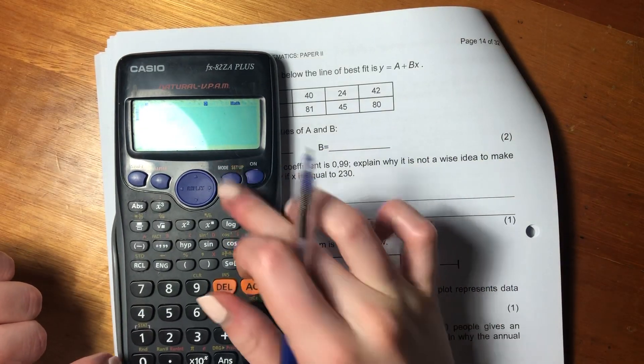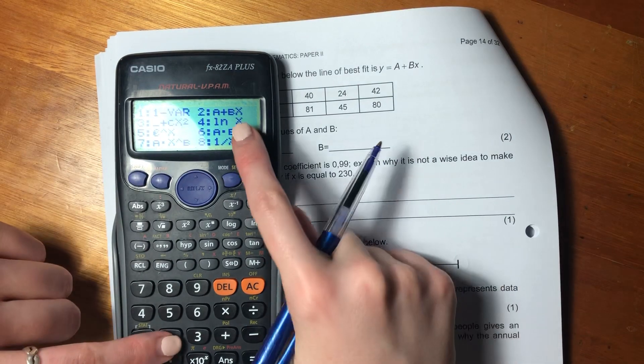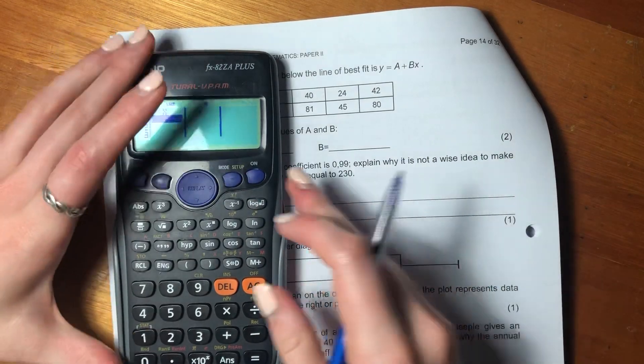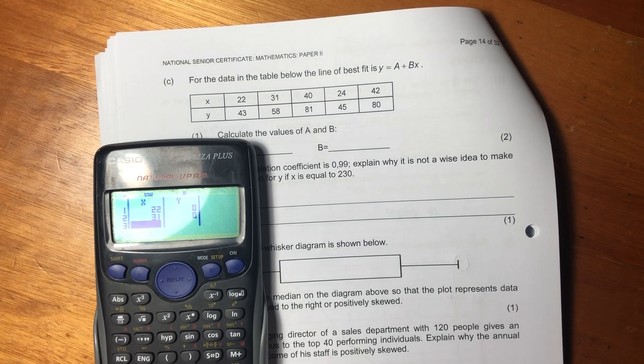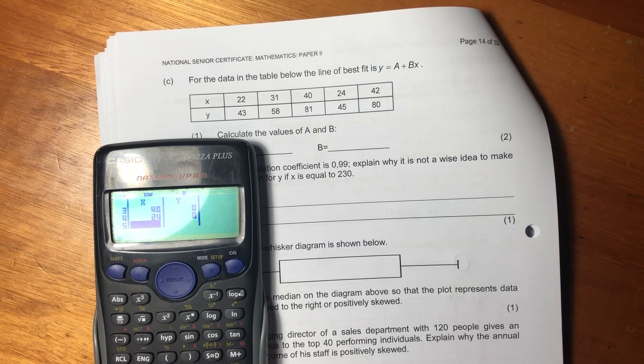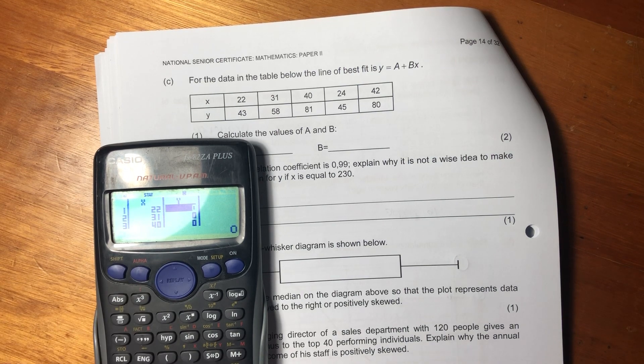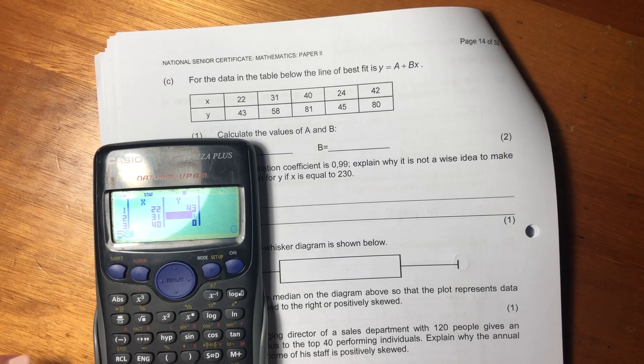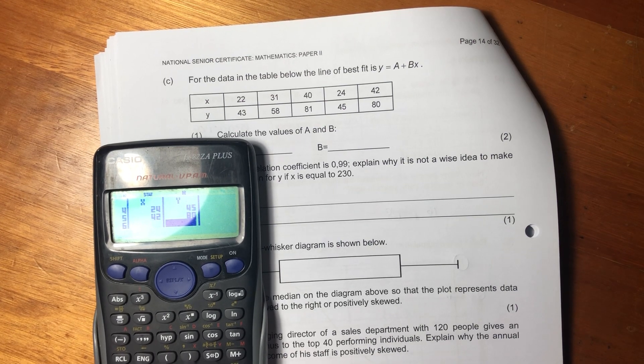Okay, you should be able to do this. Go to setup, press 2. We're doing stats. And then go to 2, because that's what we're looking for, the line of best fit. Put in all our X values. So it's 22, 32, 31, 40, 24, 42. No problem. And then put in your Y values, 43, 58, 81, 45, 80. Perfect.